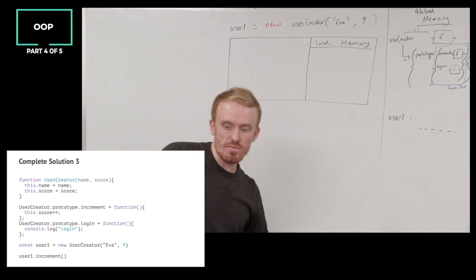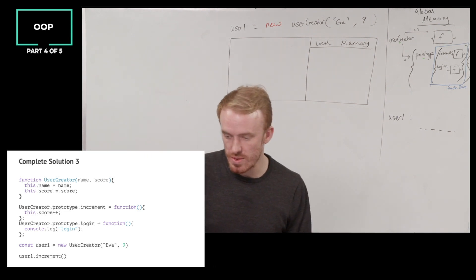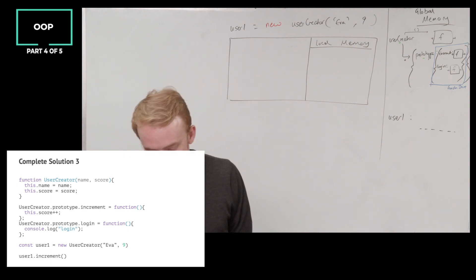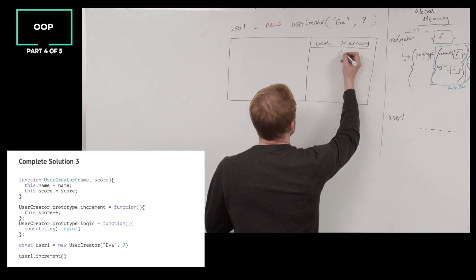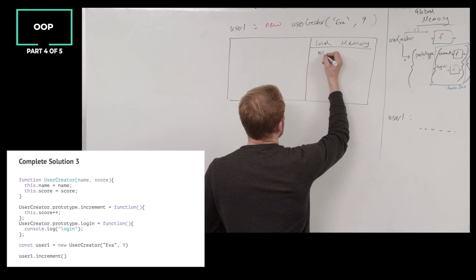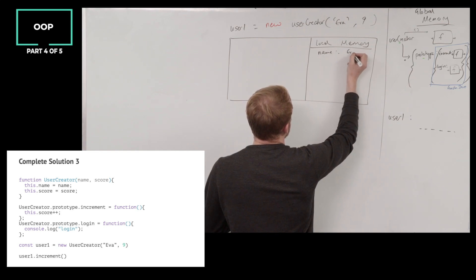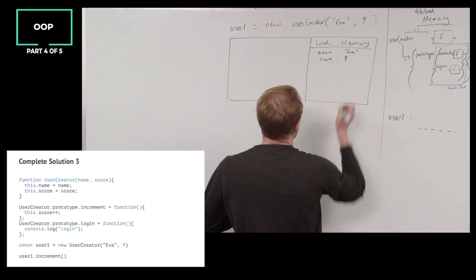Okay. First piece we're going to do is handle our arguments. Lewis, handle the arguments for me. So, our first parameter name is going to be the argument Eva. Great. Our second parameter score is the argument nine. Perfect. Okay. Here we go.